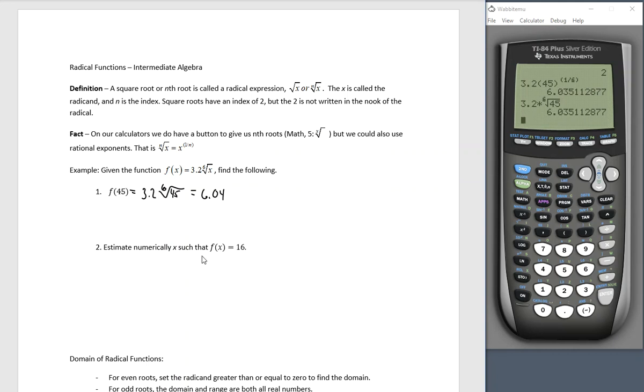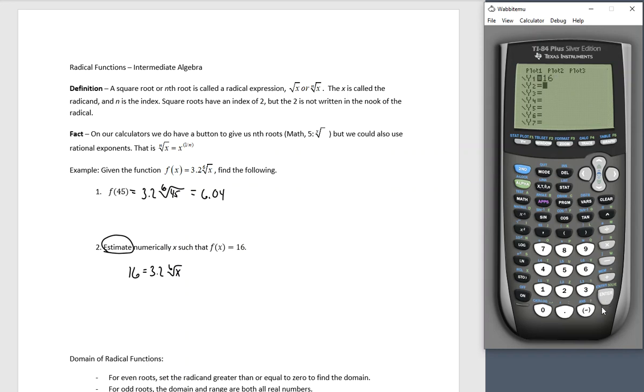Estimate numerically x such that f of x equals 16. So we replace that f of x with 16. It says estimate because we currently do not have a method for solving these. In order to estimate, I'm going to use my grapher. So I'm going to put 16 in for the left hand side. I'm going to put 3.2 times the sixth root of x because I want to graph it.